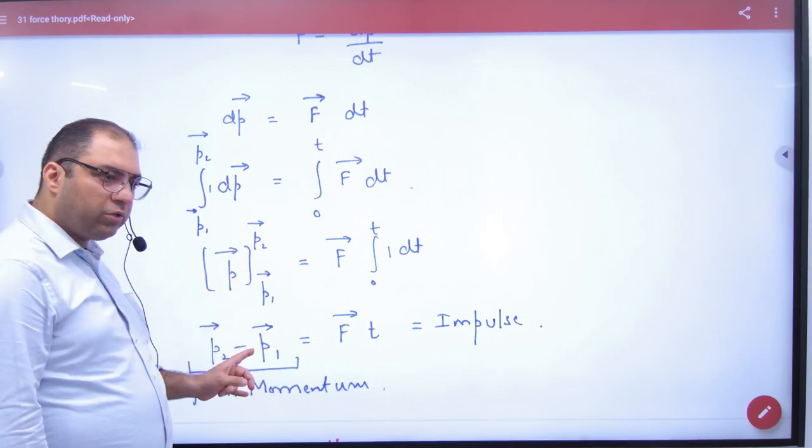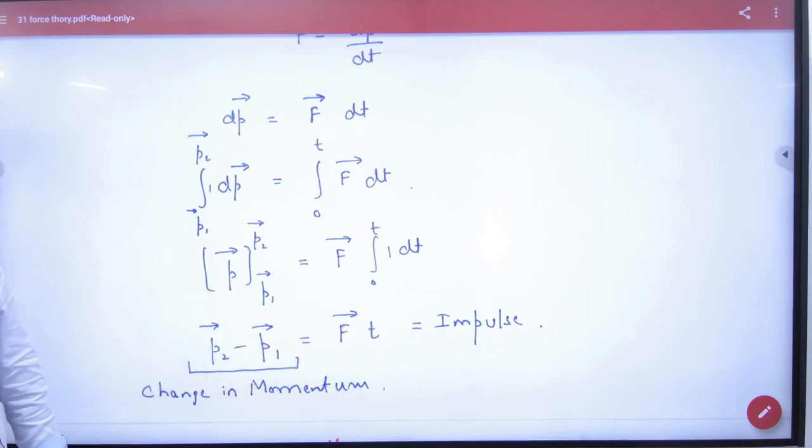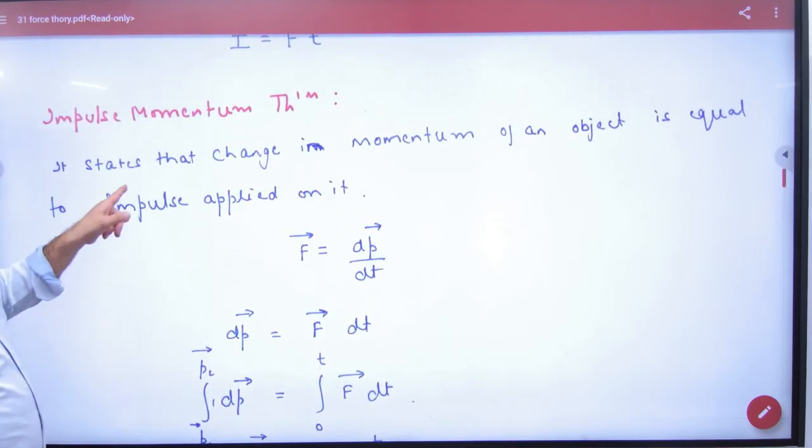What is force into time? Impulse. And what is change of linear momentum? Do you have proof? What do you write in statement? Change in momentum of an object is equal to impulse applied on it.